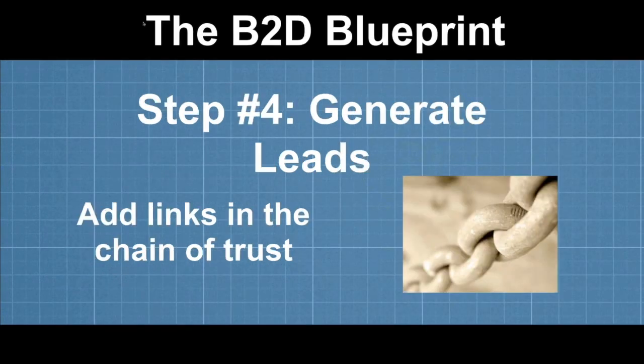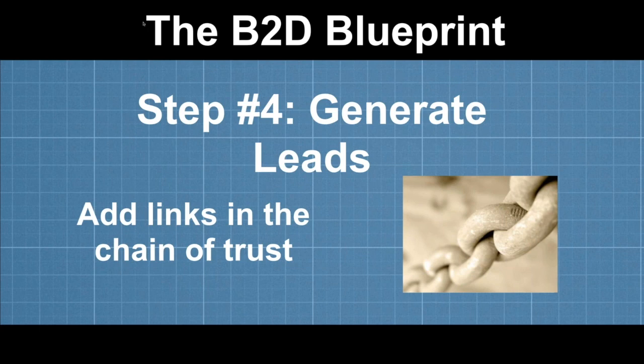Step number four was to generate leads. There are three buckets of leads. First is family, friends, and fans — people who already know, like, and trust you. The second bucket is power partners: people who have lists of doctors, and if you build good relationships with them, they'll put your yummy treats in front of their entire list. The third bucket is doctor information seekers — doctors out on the internet looking for answers, going to meetings, reading publications. You can put your breadcrumbs in front of them so they can find you.